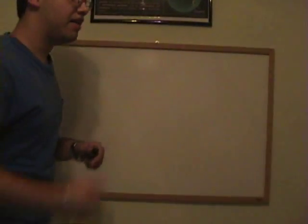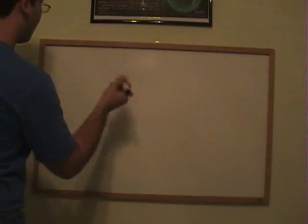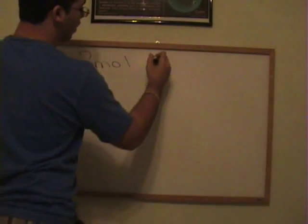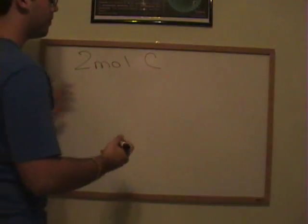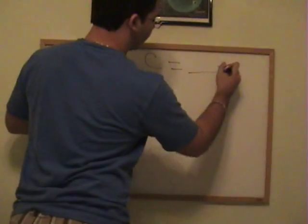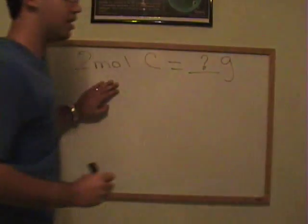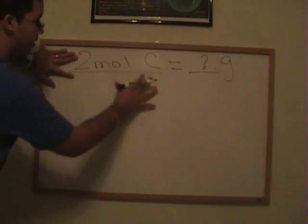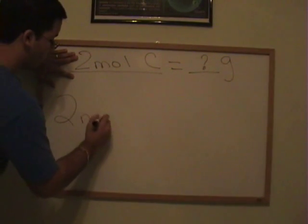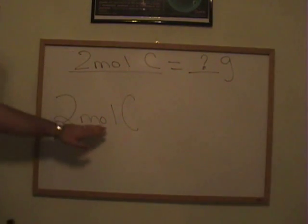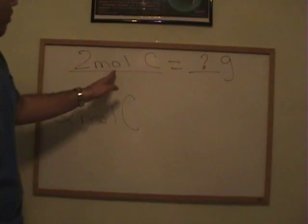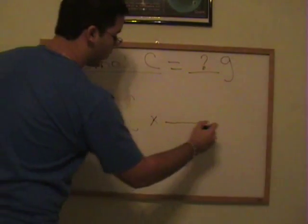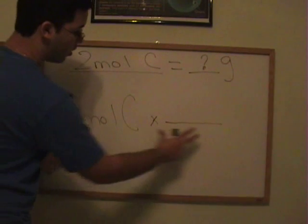So with that said, if I tell you that we have 2 moles, if we have 2 moles of carbon, how many grams is this? The first thing you need to do is write this down. Let's get this, and we're going to write it here. 2 moles of carbon. We want to go from moles to grams. So what you're going to do now is you're going to multiply by the conversion factor.